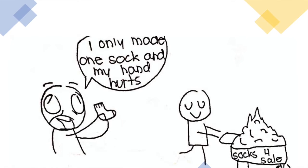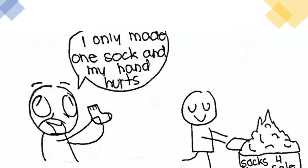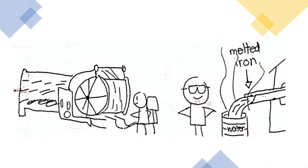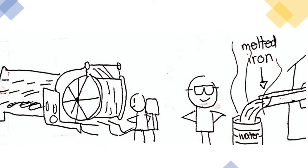Goods that had once been painstakingly crafted by hand began to be produced in mass quantities by machines in factories because of the introduction of new machines and techniques in textiles, iron making, and other industries.